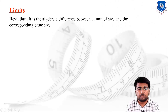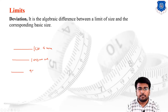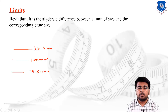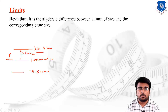Deviation is the algebraic difference between the limit of size and the corresponding basic size. Suppose 100 mm is the basic size. On the upper side the upper limit is 100.4 mm and on the lower side 99.6 mm. The algebraic difference between 100.4 mm and 100 mm is 0.4 mm — this is the deviation. When the deviation is above the zero line, towards the upper limit, it is known as upper deviation.